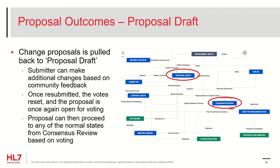Sometimes it's determined that a change proposal contains errors or did not completely or correctly include all of the proposed changes. If the criticisms can be addressed with modifications to the current proposal, then you can pull the proposal back into proposal draft to make revisions and resubmit. Remember that the voting will reset once it re-enters consensus review and must start anew. From there, the proposal may proceed into any of the normal workflow states out of consensus review as described previously. You can pull it back into the draft proposal state at any time by selecting the Workflow button and clicking Needs Revision.